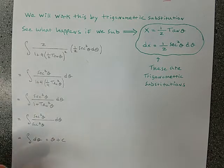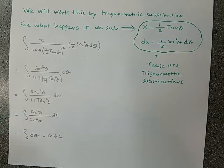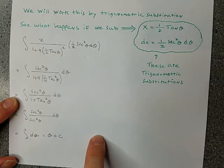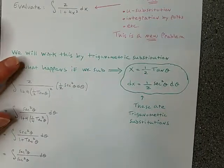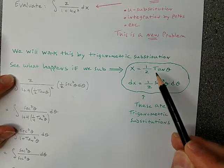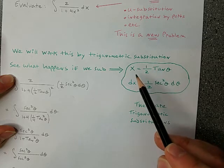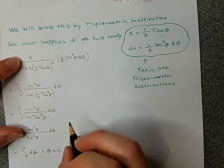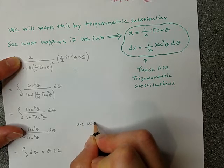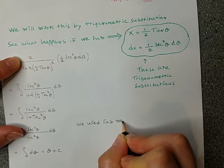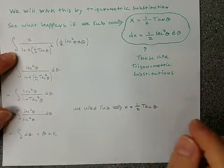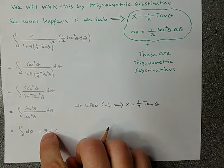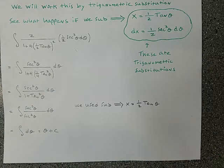Now, just like u-substitution, it is generally going to be an objective to get our answer, our antiderivative, in terms of the variable we started with. We started with x. So let's see. Through this substitution, that's the whole key to getting our original variable back.